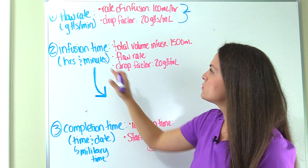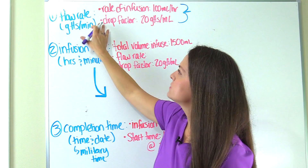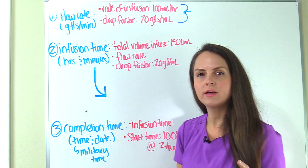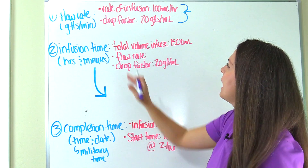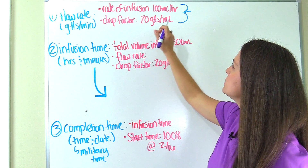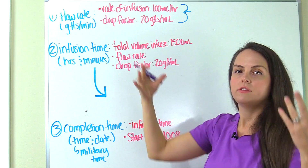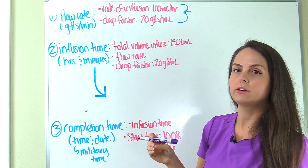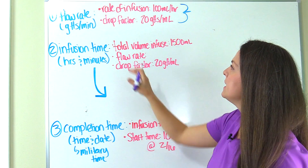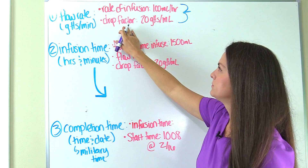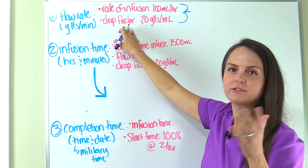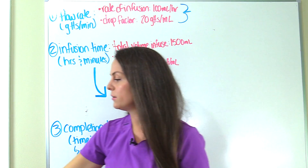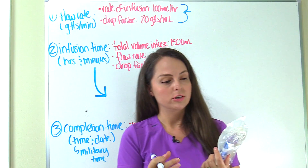Flow rate is written in drops per minute — that is our goal. In order to solve for that, I need to know two things from the problem: I need to know the rate of infusion, so how fast this fluid is going to be infusing in milliliters per hour. Our patient is going to be getting 100 milliliters of fluid every hour. Then I need to know the drop factor, which comes from our IV tubing set.